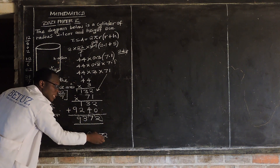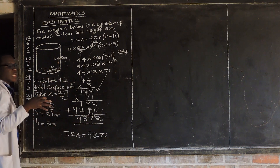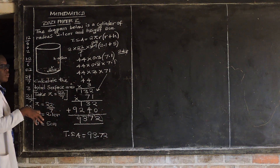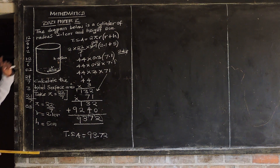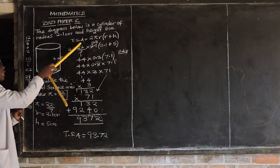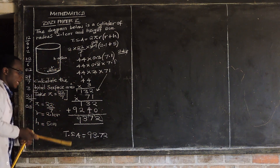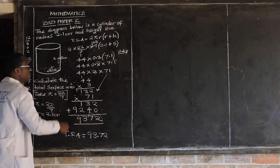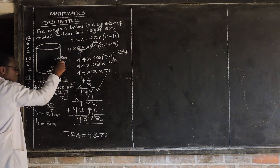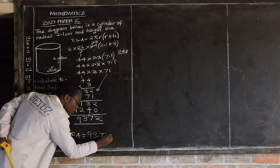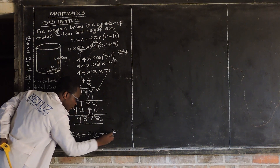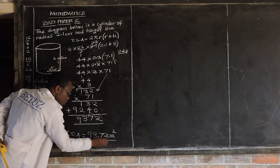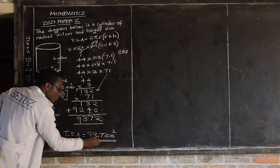Ensure that you write the units — units are very, very important. We are calculating the total surface area, so the units are centimeters squared. This is our final answer.